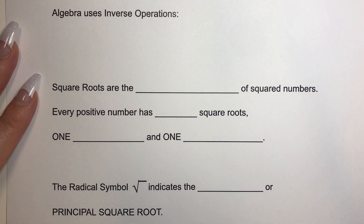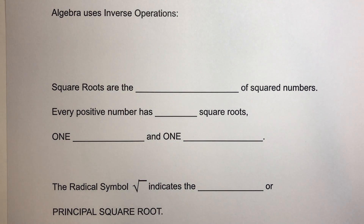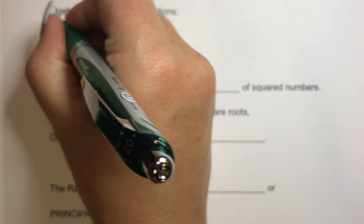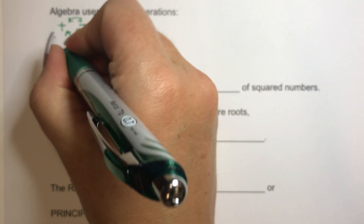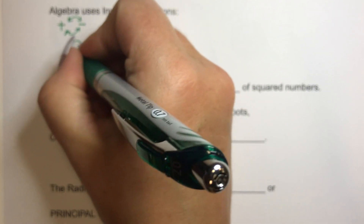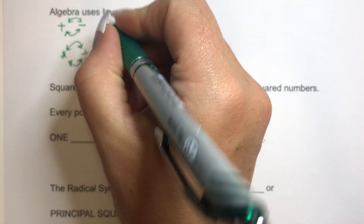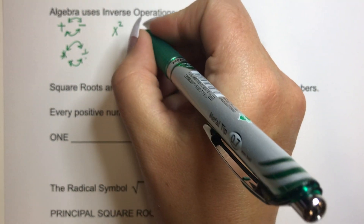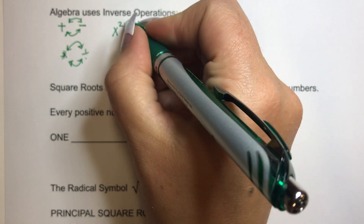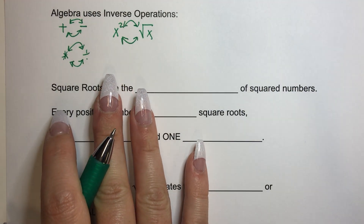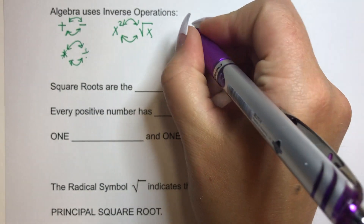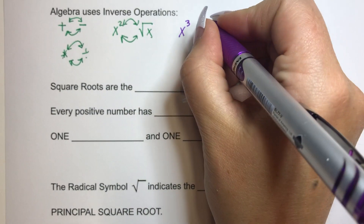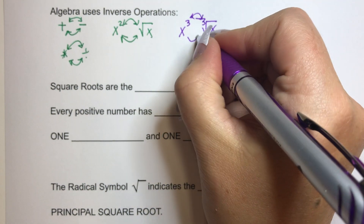Algebra uses inverse operations. So we've talked a lot about inverse operations. What are some inverse operations? What's the inverse operation of addition? It's subtraction, and subtraction's inverse is addition — those are inverse operations. But in this section we're going to be learning about some other inverse operations: if you have squared numbers, the square root is the inverse operation of the squared numbers. Those are inverse operations.